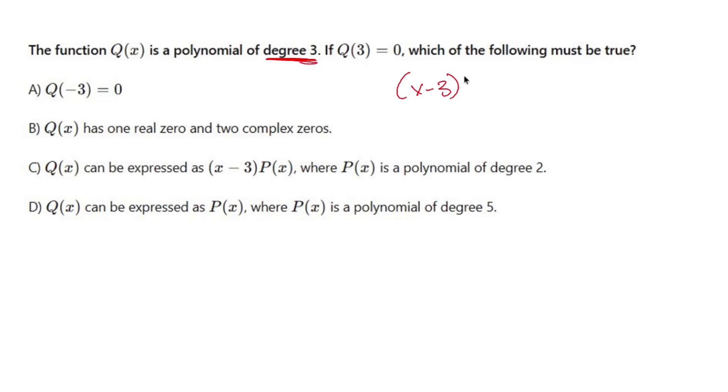So if I have a factor of x minus three, that means this is going to be some type of quadratic going on in here.